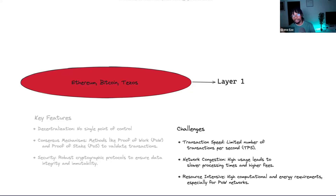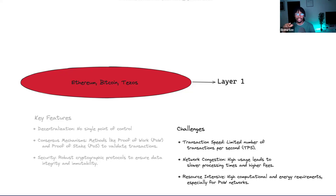Bitcoin processes about seven transactions per second, and Ethereum about 15 to 30 transactions per second using proof of work consensus — not very high. There's also the issue of network congestion: the more people use the network, things take longer, gas fees are much higher. All the transactions are queued and processed one after the other, which doesn't give users a very good experience.